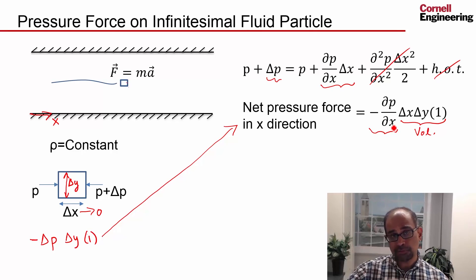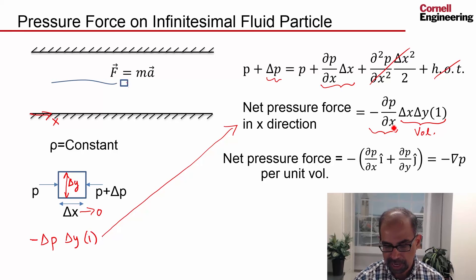Similarly, I can write the net pressure force in the y direction and put it together to get the net pressure force on the infinitesimal fluid particle per unit volume. This is in the x direction, this is in the y direction, I've taken the negative sign out, and this is usually written as minus del p using the del operator.